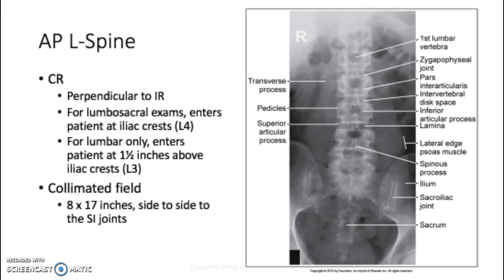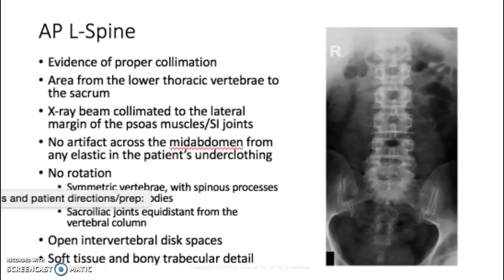The central ray is perpendicular to the image receptor. Depending on your facility, center one and a half inches above the iliac crest, which places you at about L3; otherwise center right at the iliac crest, which is L4. For collimation, the width should be about half of 14 inches — roughly 7 to 8 inches narrow. Make sure you include the SI joints and the lateral edges of the psoas muscle.